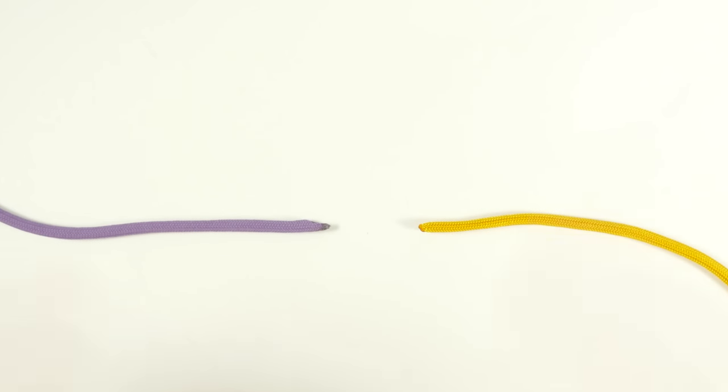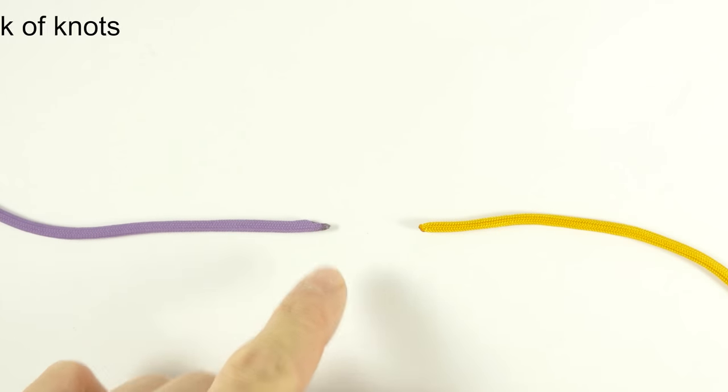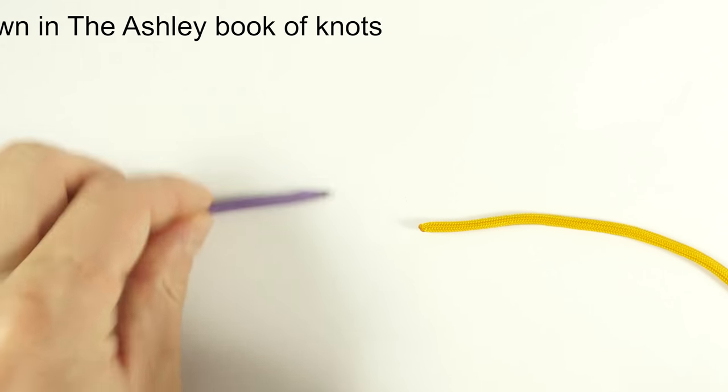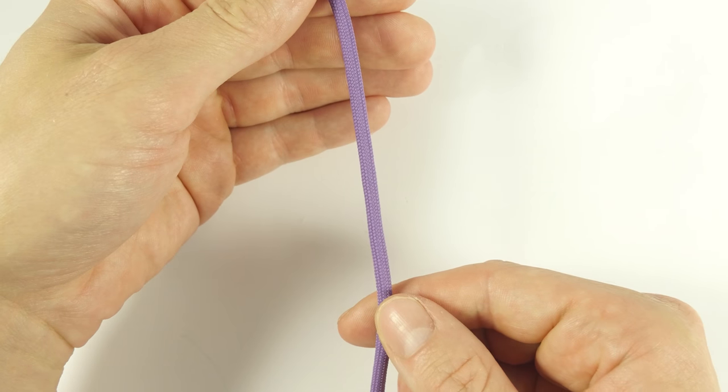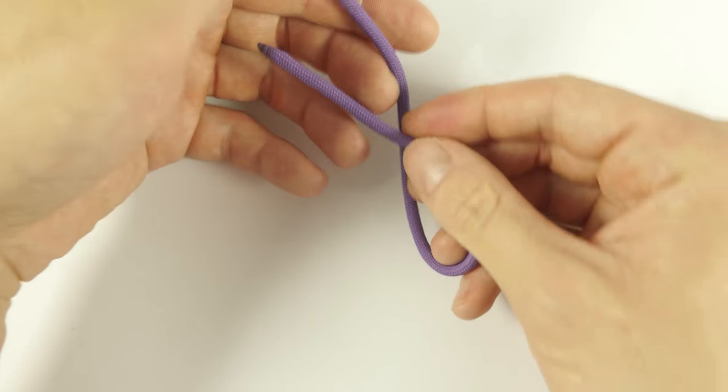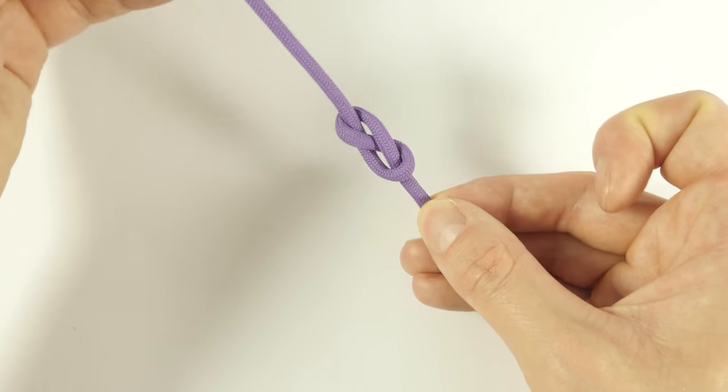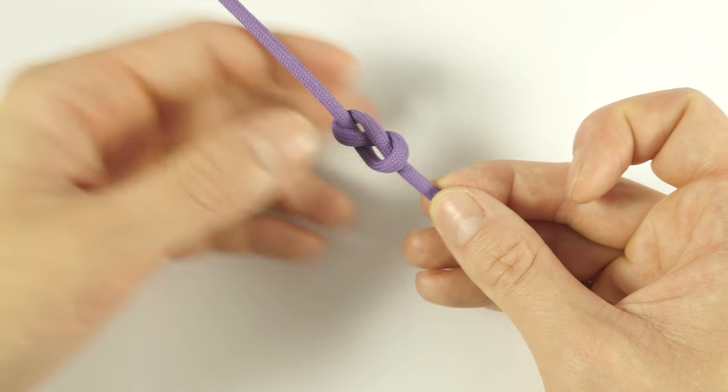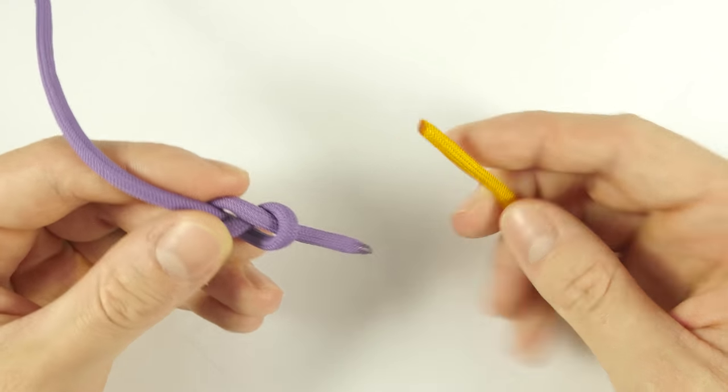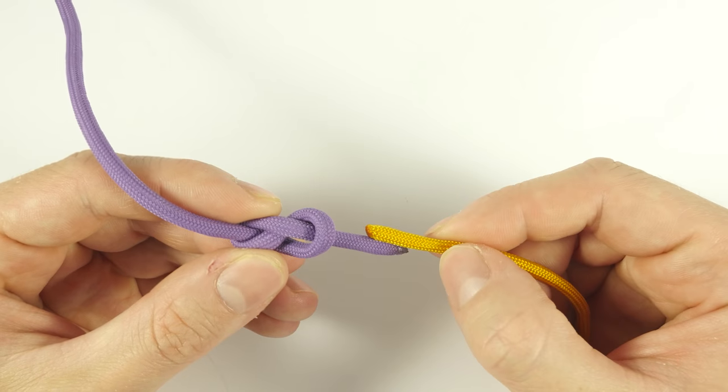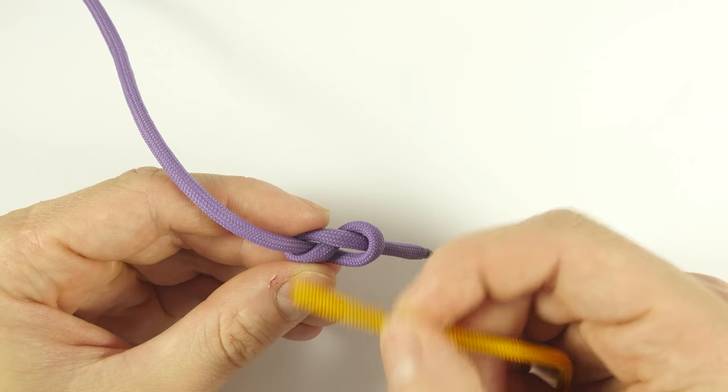So the first way of using the figure 8 as a bend is to take one end of your rope and use it to tie a figure 8 knot. Like this. Pick up the second end of a piece of rope and follow the working end all through the knot and out at the standing end.